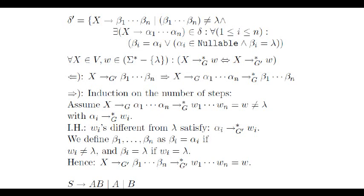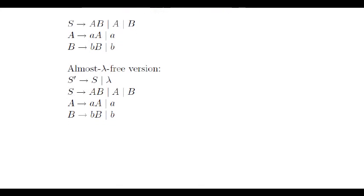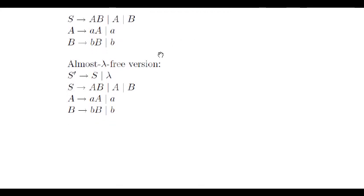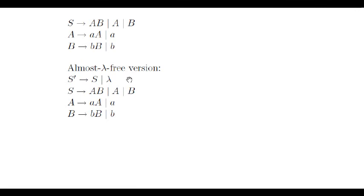Here we are preserving the language except for the empty word. If we want to totally preserve it, we are forced to have at least one lambda production. Here we have the grammar of our example once transformed. We also add a new initial symbol that chooses between generating what can be generated from S or directly generating the empty word. We say that a grammar is almost lambda free if either there are no lambda productions, or it has just one lambda production from the initial symbol and, in the latter case, the initial symbol does not appear in any right hand side. This implies that if the lambda production is not used in the first step, then no lambda production is used at any time. Hence, in the derivation of any word different from the empty word, no lambda production is used.